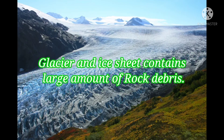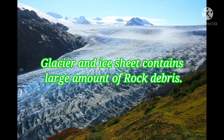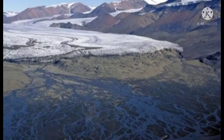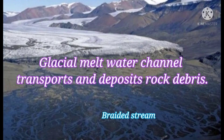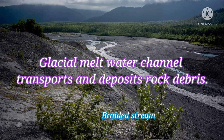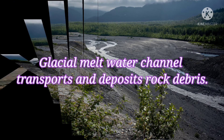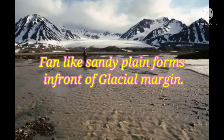Let's learn about the formation of an outwash plane. Glaciers contain a large amount of rock debris due to erosion of underlying rocks as they move downward. After the ice age, when glacier ice melts, it creates meltwater channels which carry this rock debris away from the glacier and deposit it over a wide area beyond the terminus, forming a fan-like sandy plane known as an outwash plane.